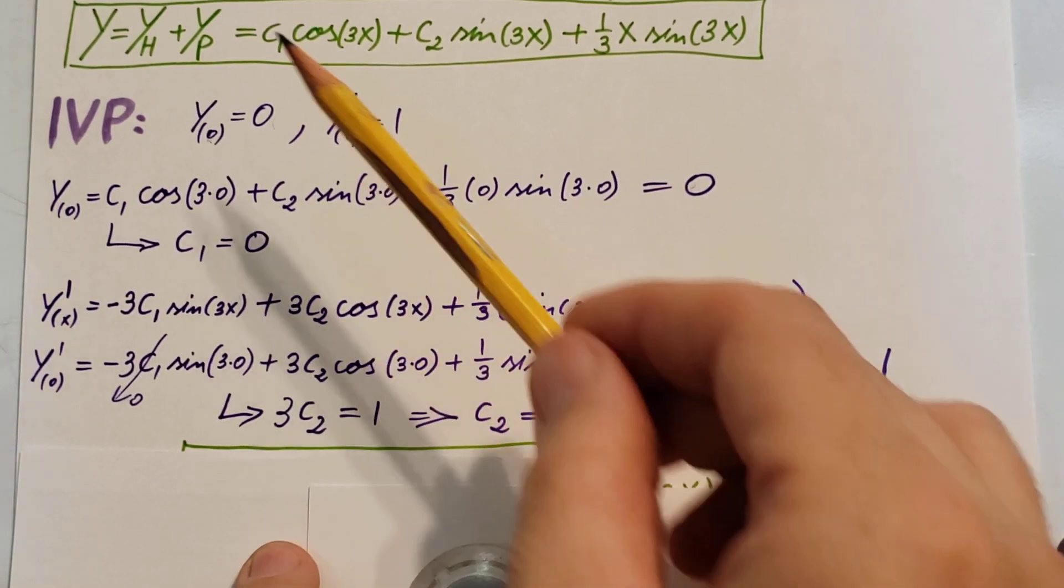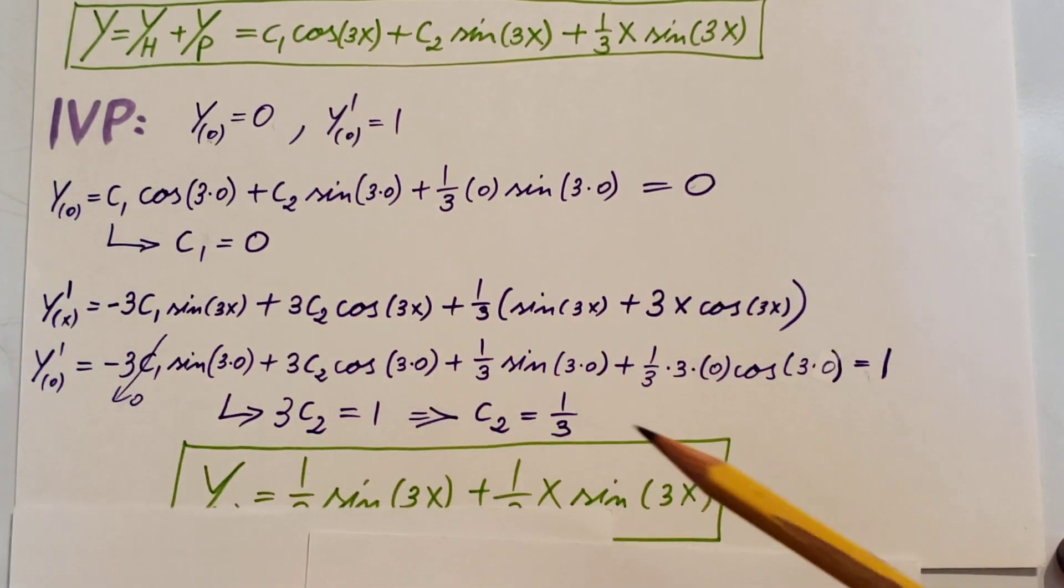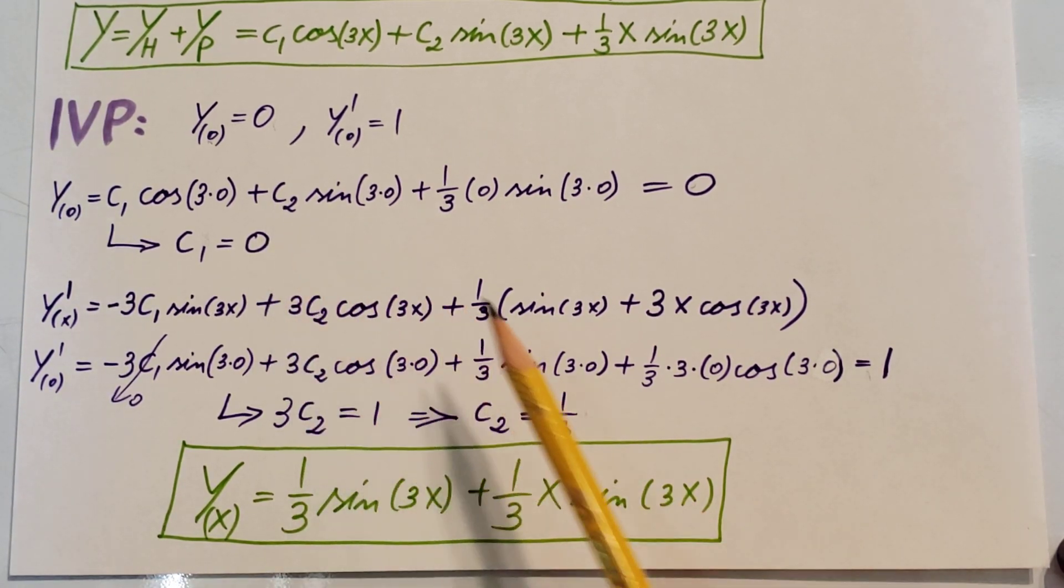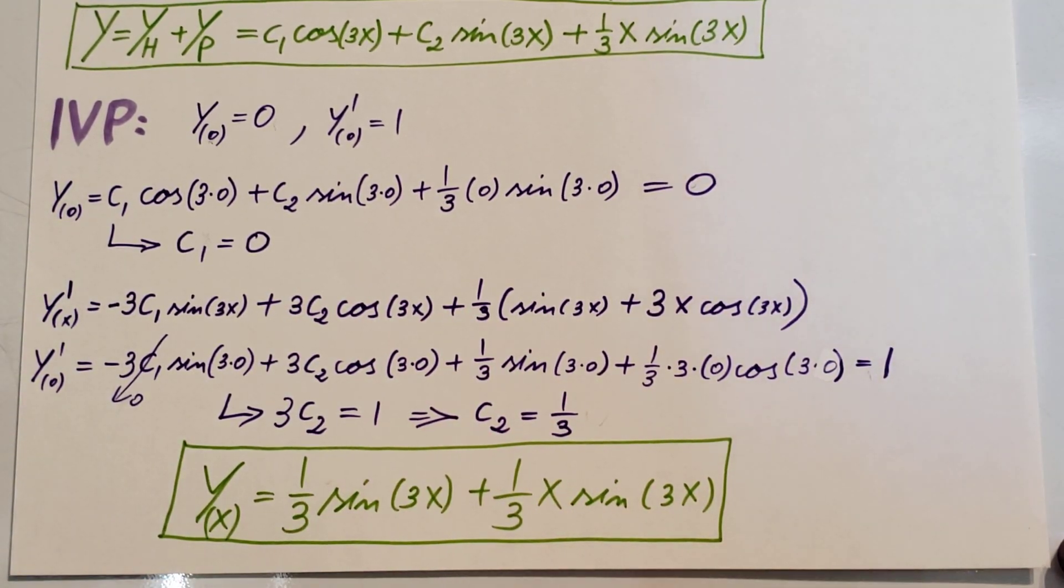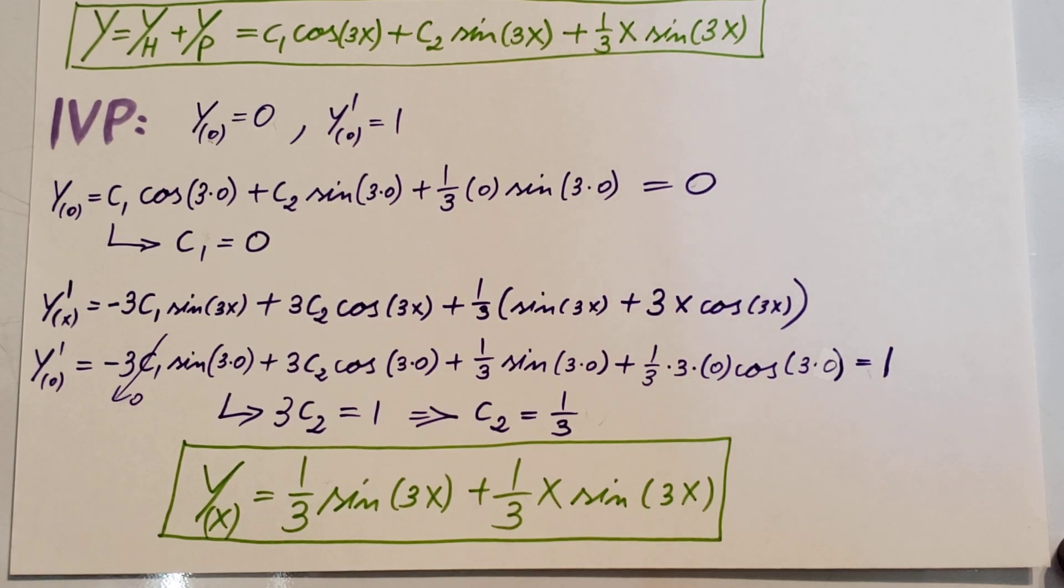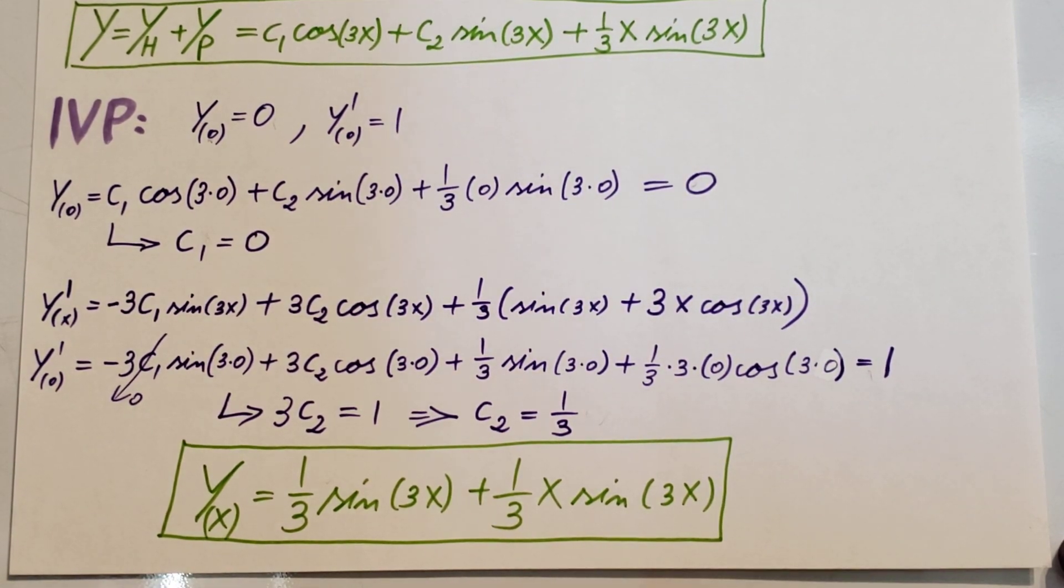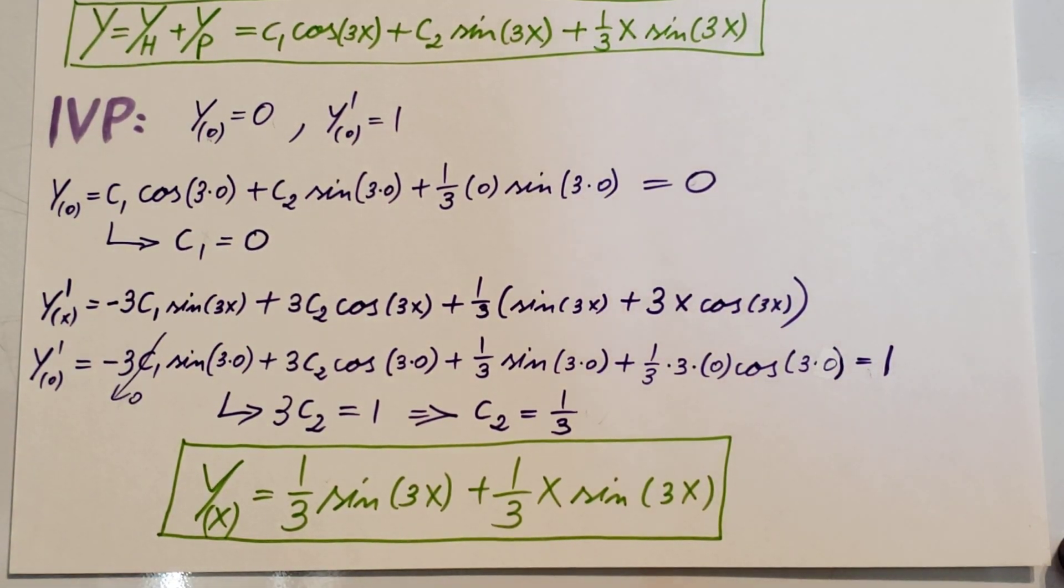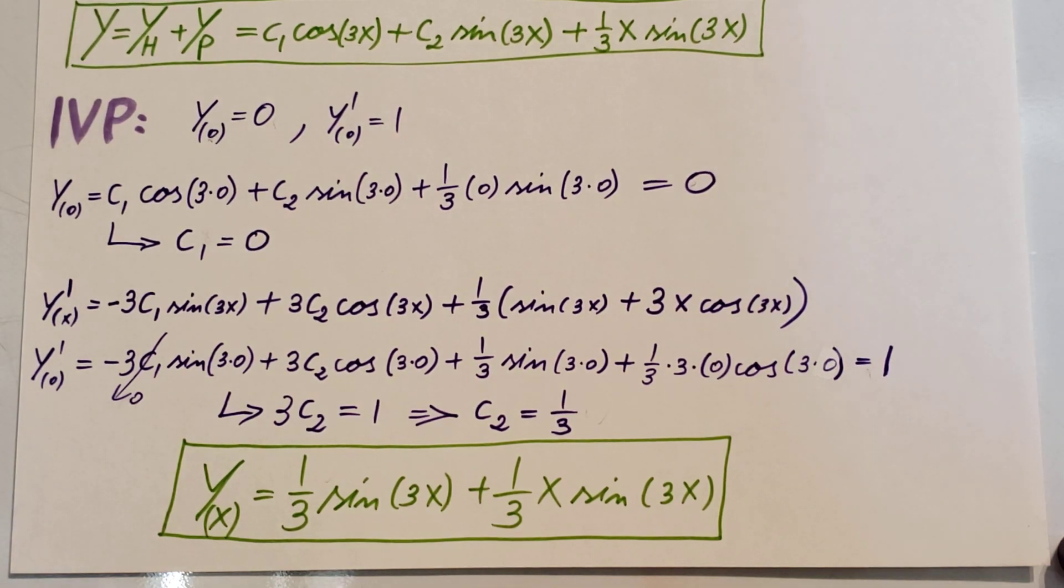Now all we have to do is re-update our solution. Get rid of C1 and C2, plug in our new values that we have found. And here's our final solution: 1 third sine 3X plus 1 third X sine 3X. Alrighty, hope I was able to explain it clear enough. Thank you guys for watching. Please subscribe and like the channel, like the video so other people can find it as well. Have a good day.